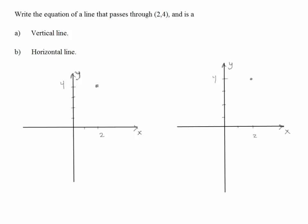OK, the first one says the line has to be vertical. So it has to be a line that passes through that point as a vertical line.